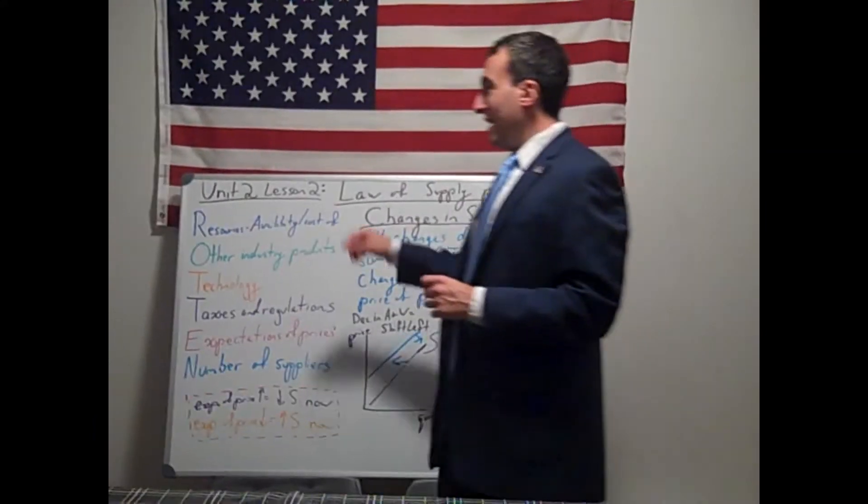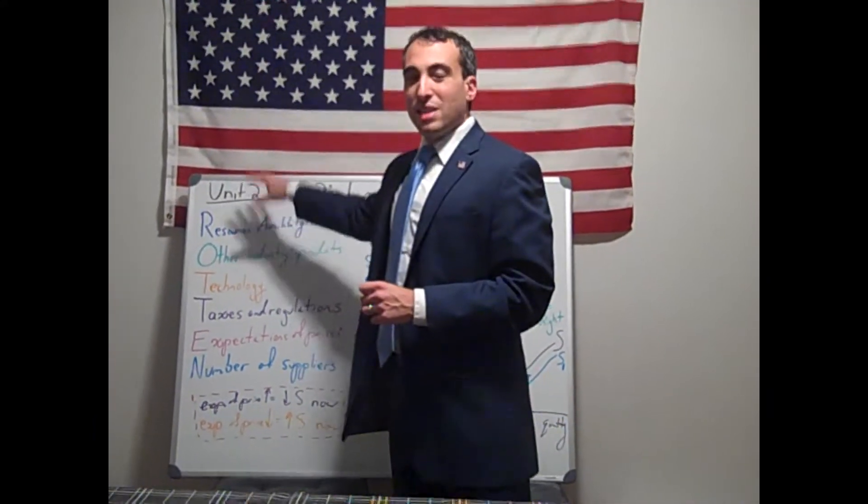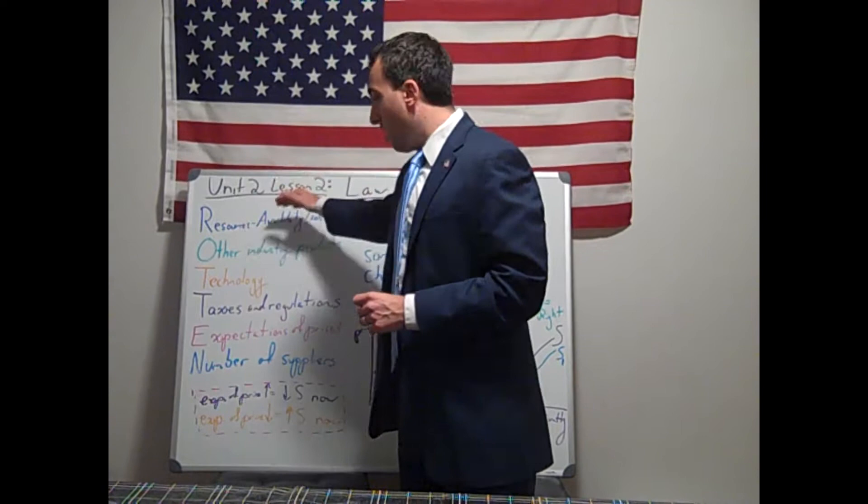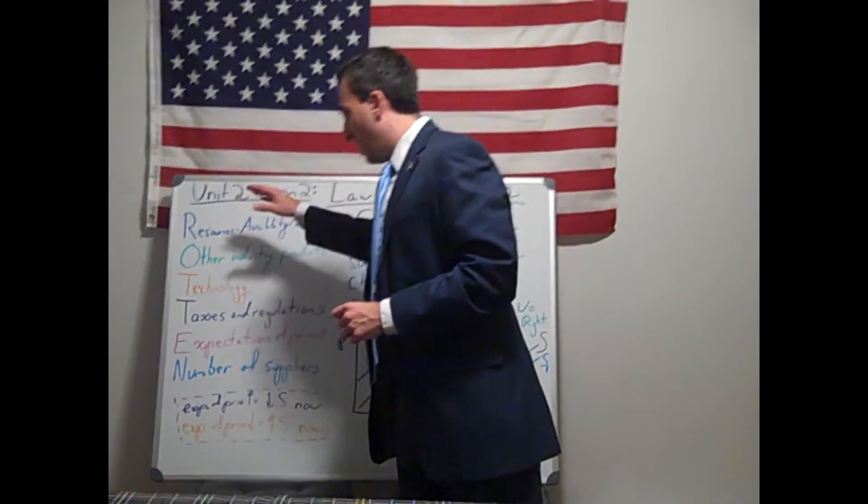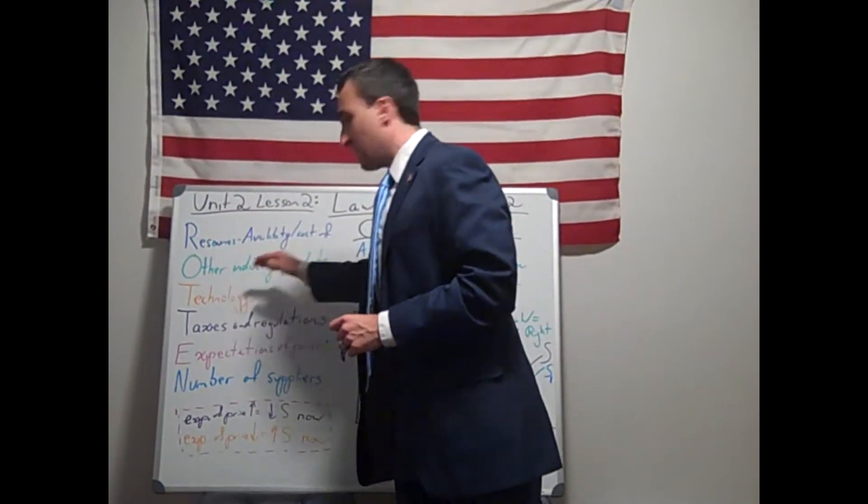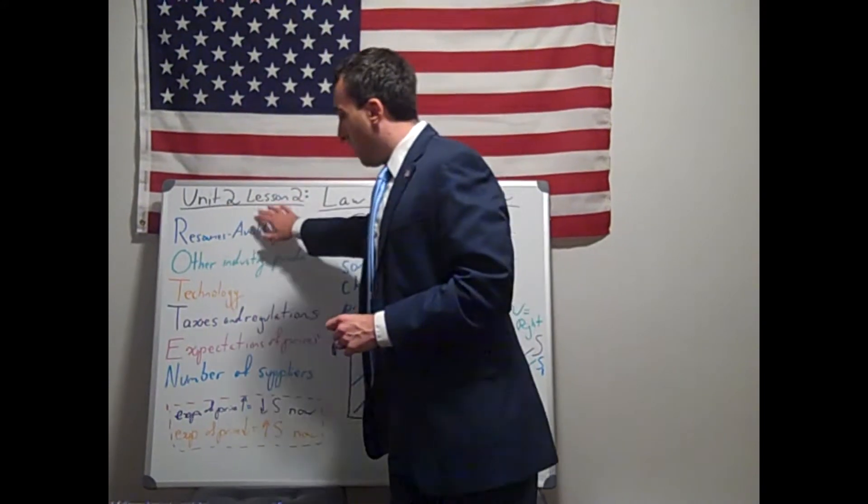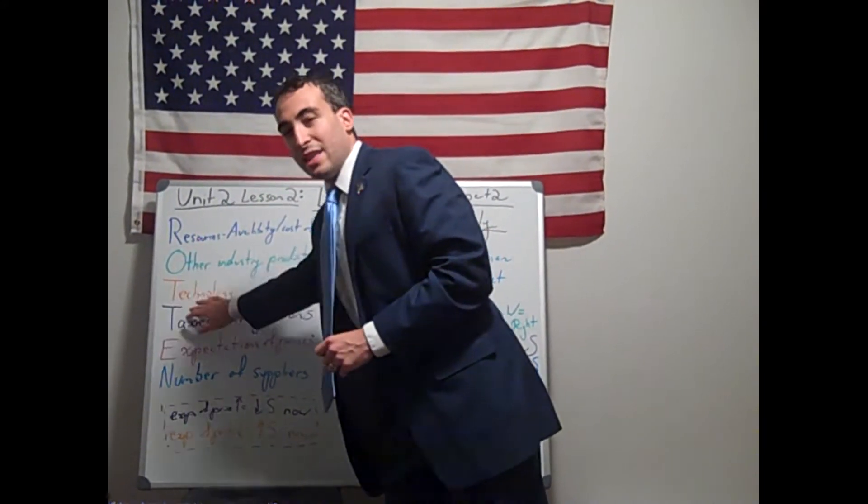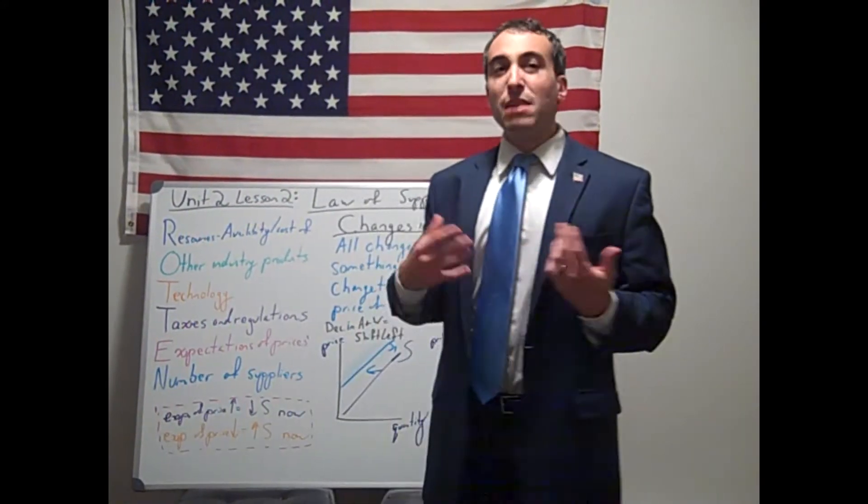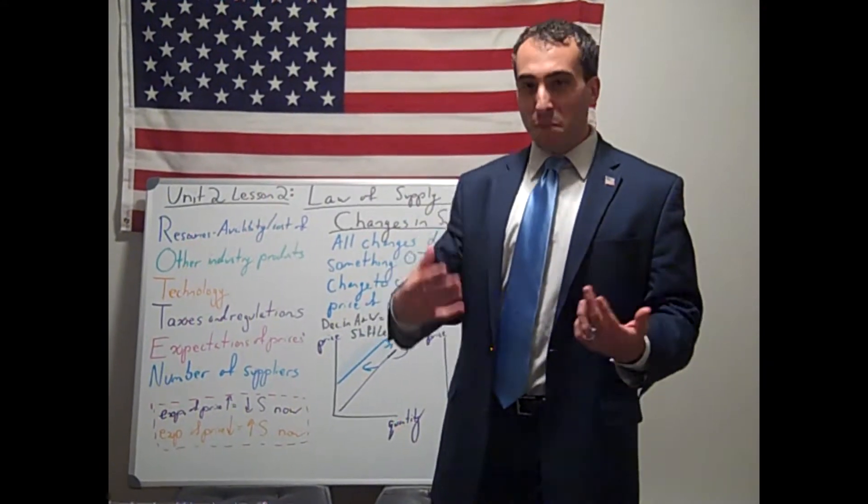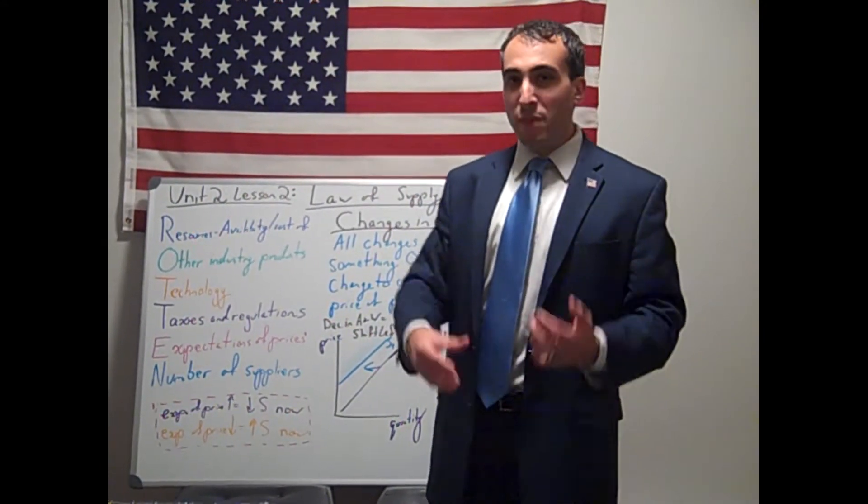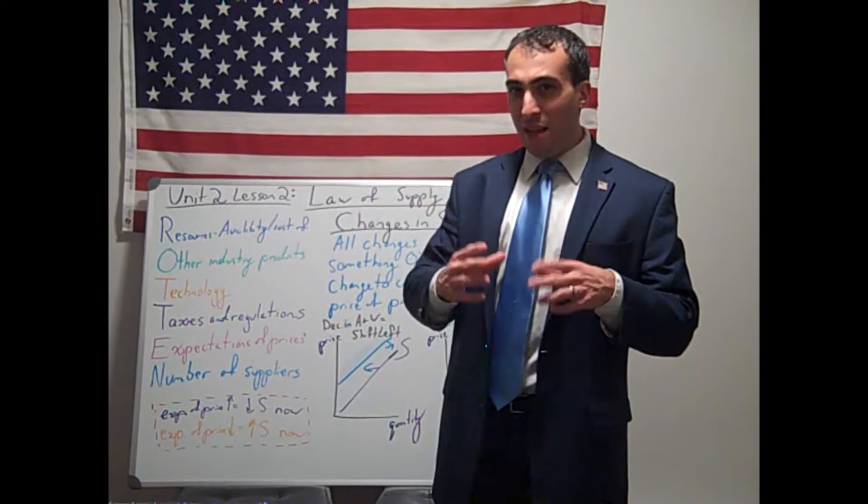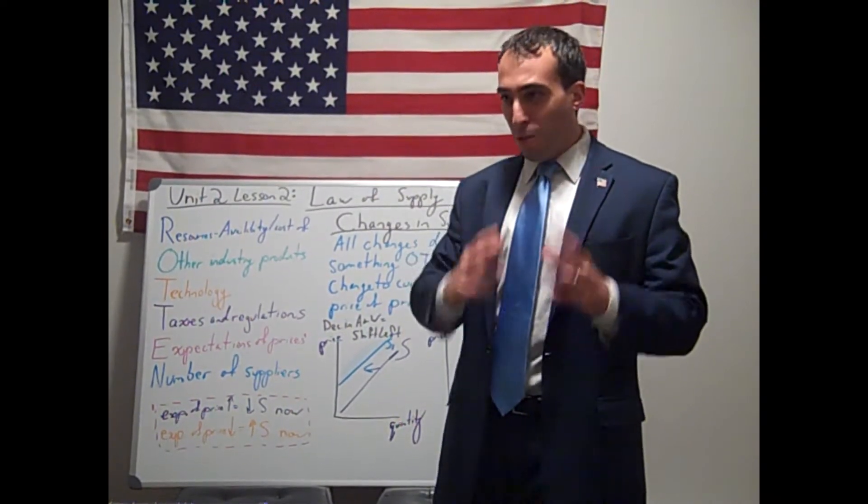O is the trickiest one, and R really is the one that appears the most, because R along with technology, taxes, and regulation all have to do with input costs and the availability and cost of the resources. And that's the biggest tell that it is a supply question.